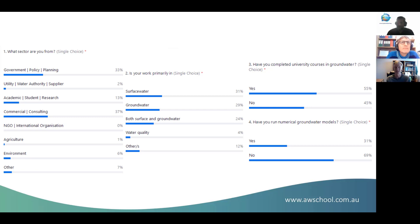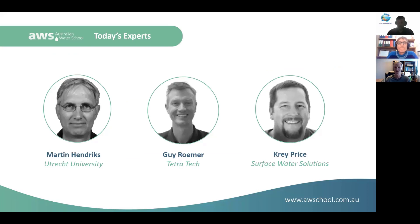About 31% of attendees have run groundwater models before. Guy works with Tetra Tech, a global environmental consultancy firm — he was even in Perth, Australia for a year and a half. He's been doing groundwater modeling since his master's degree, starting at Los Alamos National Laboratory doing groundwater flow and solute transport modeling for Yucca Mountain — the proposed high-level nuclear waste repository in the US. He started with Tetra Tech in 1999, working mainly for commercial industry: mines, oil and gas, contaminated sites.